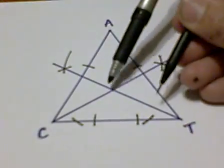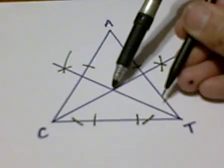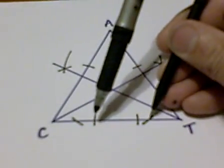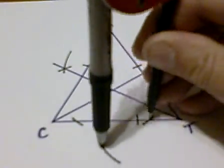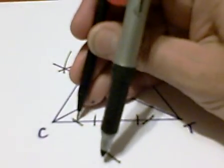And again, we're going to put the stylus on the in-center, strike two arcs through side TC. And from each of those intersections, we'll strike two arcs to create another intersection.